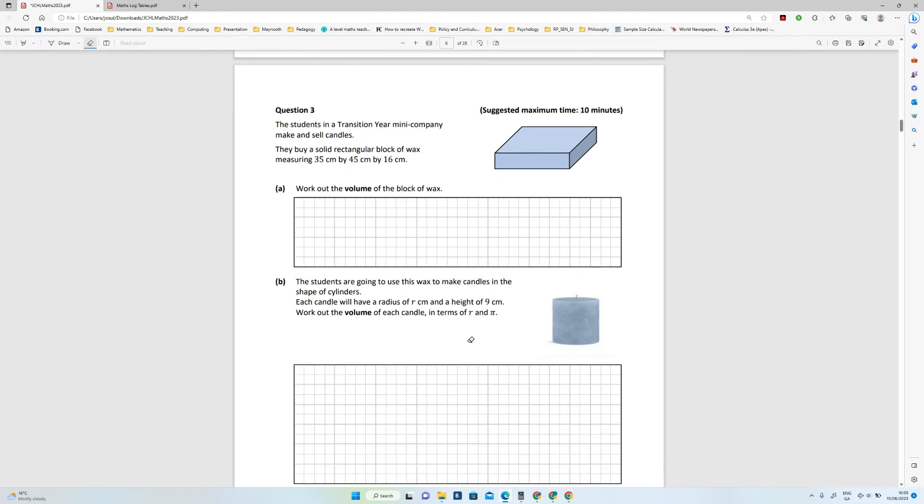Alright, so question 3, the higher level paper Junior Cert Maths 2023, looks like an area and volume question. The students in Transition Year mini company make and sell candles. They buy a rectangular block of wax measuring these sizes, and then the first question is work out the volume of the block.